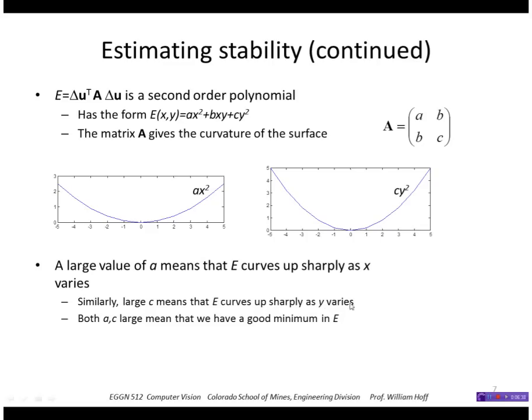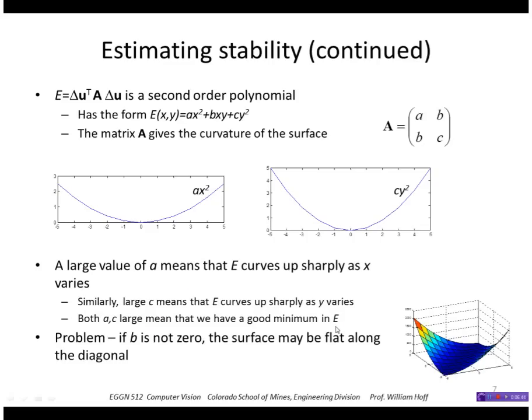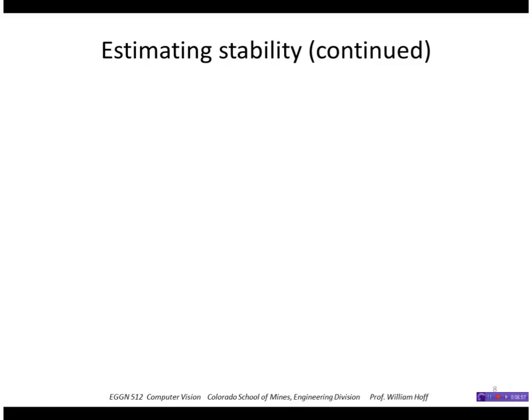But if the off diagonal elements are not zero or close to zero, I may have a flat or non-curving surface along the diagonal. So I can resolve this by looking at the eigenvalues and eigenvectors.